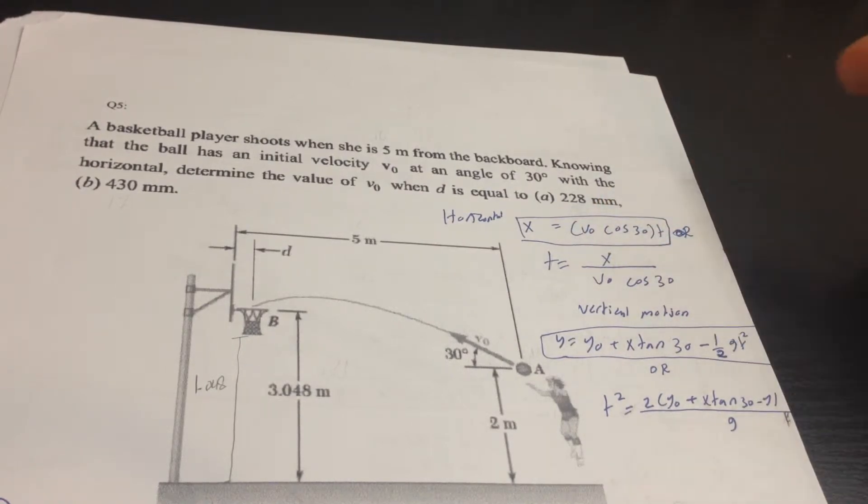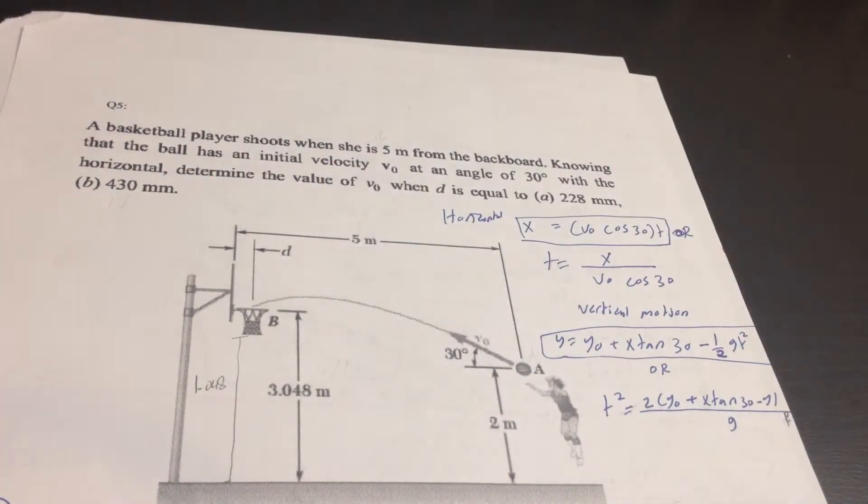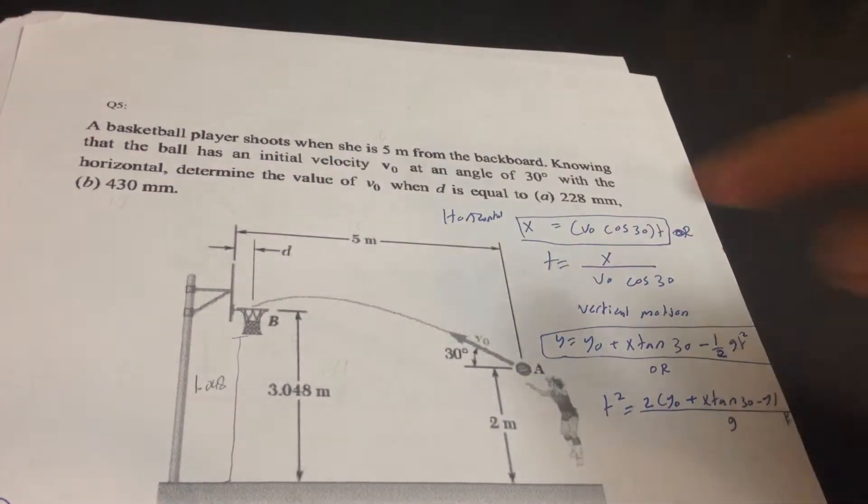228 times 0.001, which will give us the answer in meters. Of course, we have to convert this number. And for Part B, it's the same idea because they gave us the distance in meters, like five meters.